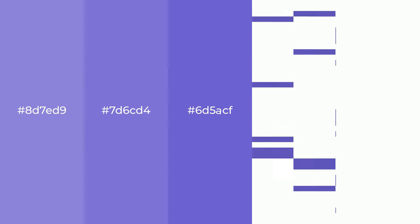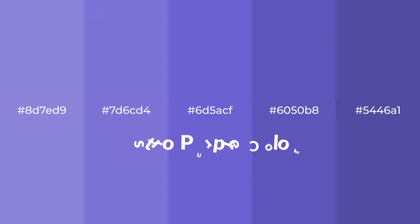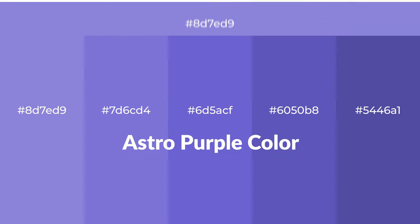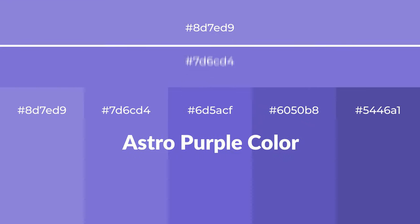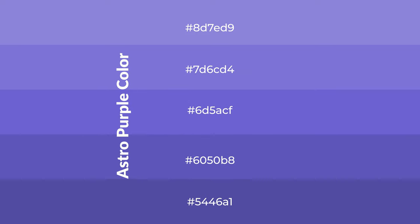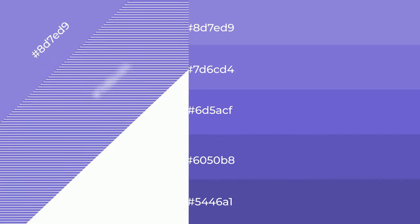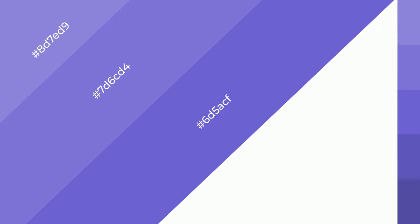Cool shades of astro purple color with blue hue for your next project. To generate tints of a color, we add white to the color. Tints create light and exquisite emotions. To generate shades of a color, we add black to the color, and it is used in patterns, 3D effects, and layers. Shades create depth and drama.